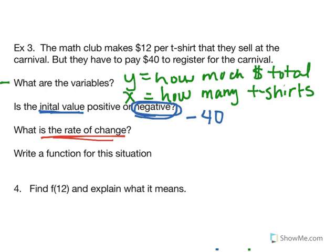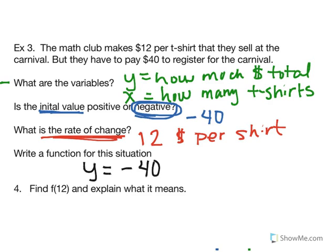When we talk about the rate of change, what we're talking about is the $12 per shirt. So if I was asked to put this all together into a function, I would say my total money is equal to negative 40 for that registration fee, plus, with a positive, $12 per how many t-shirts I sell. I could of course also write this in function notation.